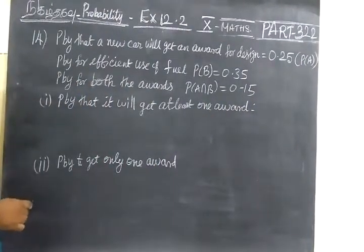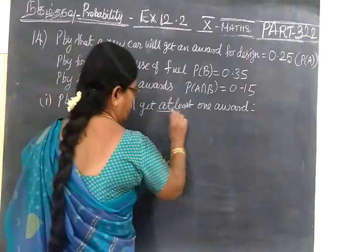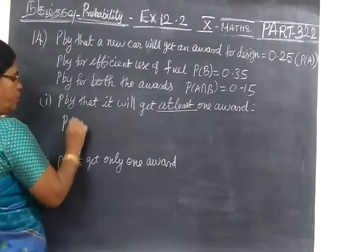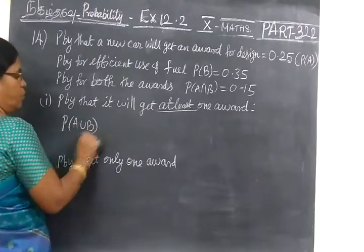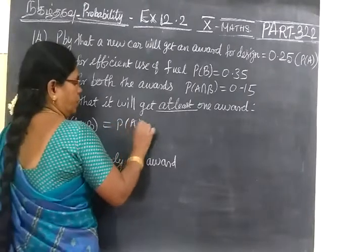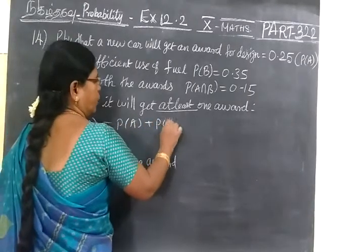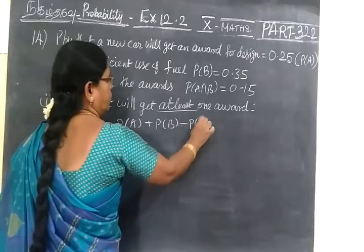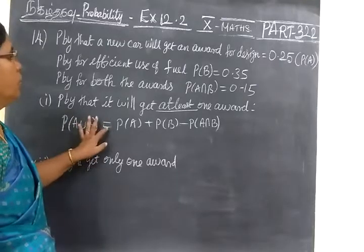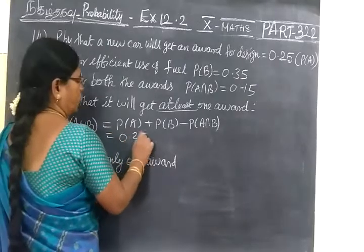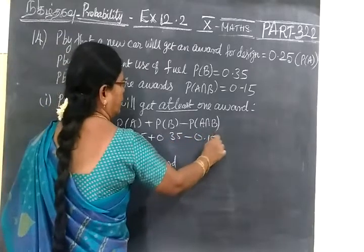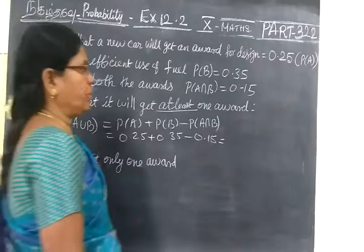Now we are going to find probability that it will get at least one award. In the previous class we know that at least means we are using the formula P(A ∪ B) = P(A) + P(B) - P(A ∩ B). Here itself we know the answer.